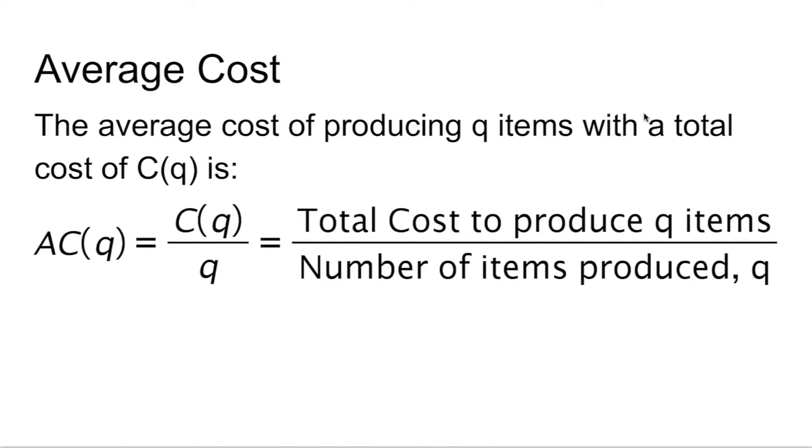If you think back to when you learned about averages, usually that's when you sum up the items and divide by the number of items that you added together. In a similar fashion, average cost is the total of all of our costs divided by the number of items we produce.